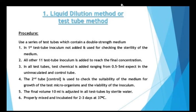The antimicrobial chemical is added in concentrations ranging from 0.5 to 5 ml, with the final volume adjusted to 10 ml with sterile water. The tubes are properly mixed and incubated at 37 degrees Celsius for 2 to 3 days. After incubation, the test tubes are examined for growth to record the minimum inhibitory concentration.